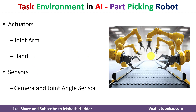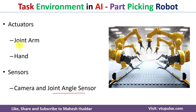The last component is Sensors. Cameras are required so that the agent can see and sense the part. Based on the image, the agent decides what kind of part it is. A joint angle sensor is also used to select and handle that particular part before placing it into the correct bin.